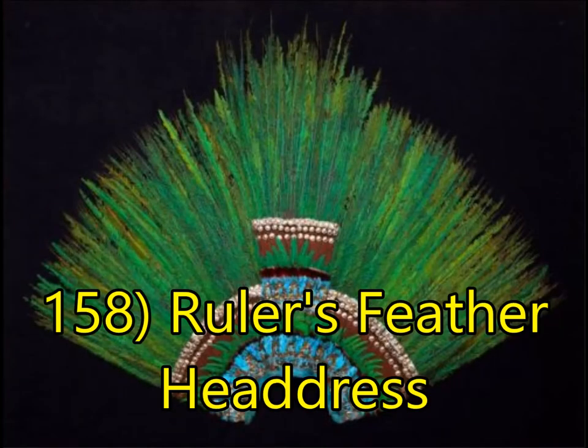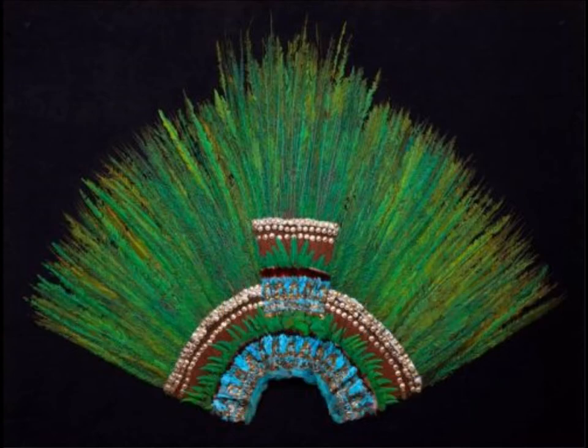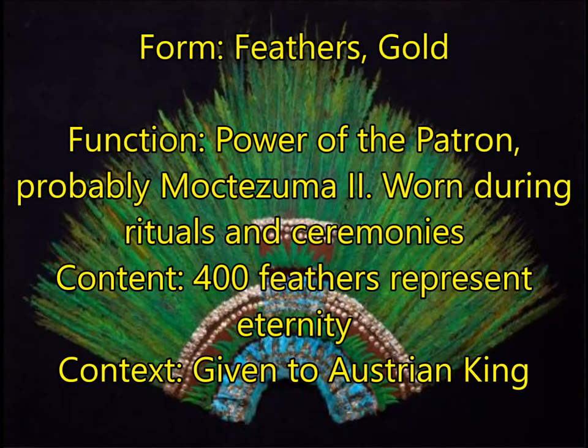The Ruler's Feather Headdress is a pretty easy work to remember, but you do need to know that it belonged to Montezuma the Second. It represents the power of the patron, was worn during rituals and ceremonies — especially when impersonating a god — and contains 400 feathers. The number 400 represents eternity. It was eventually given to an Austrian king and remains in Austria to this day. For form, of course, feathers — but don't forget it also contained gold, representing that power.